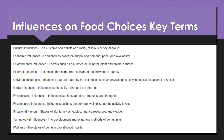Cultural influences are the customs and beliefs of a racial, religious, or social group. Economic influences are food choices based on supply and demand, price, and availability.